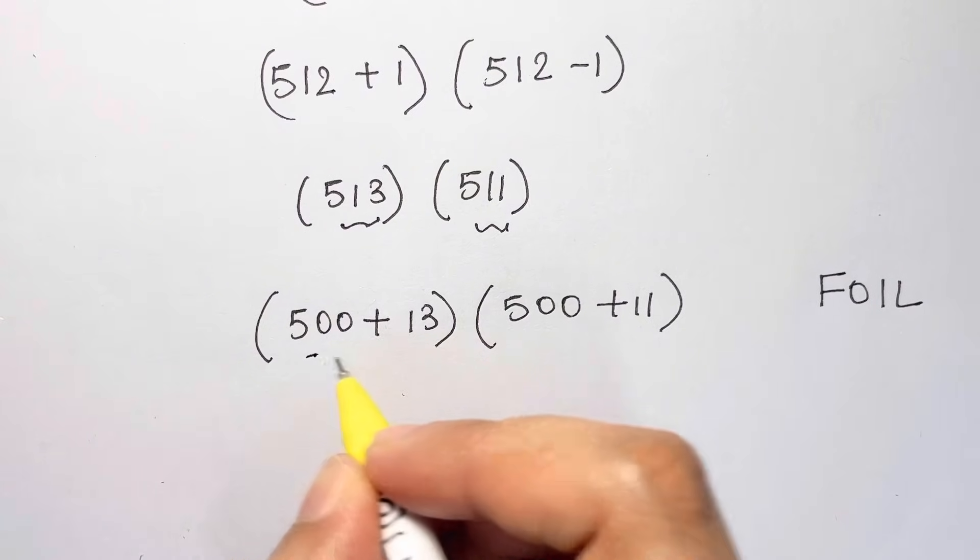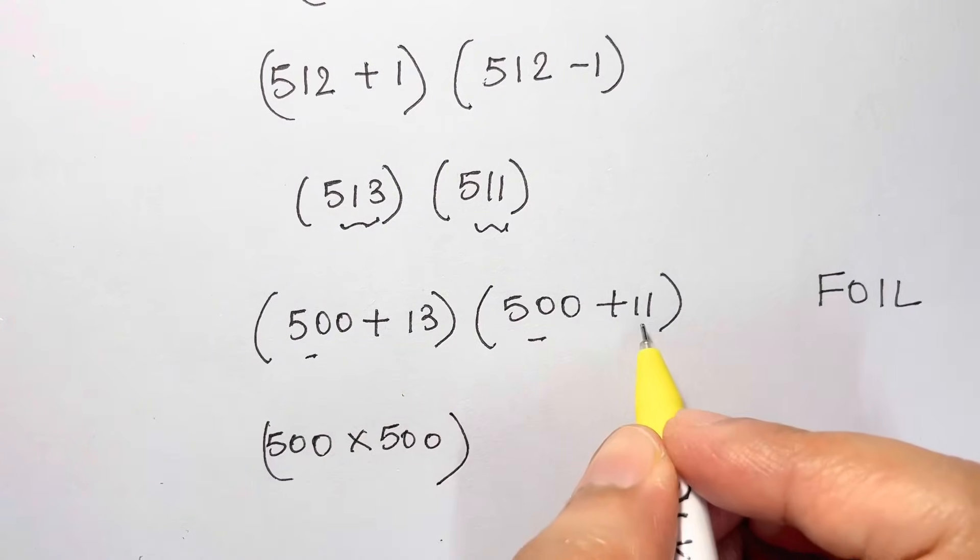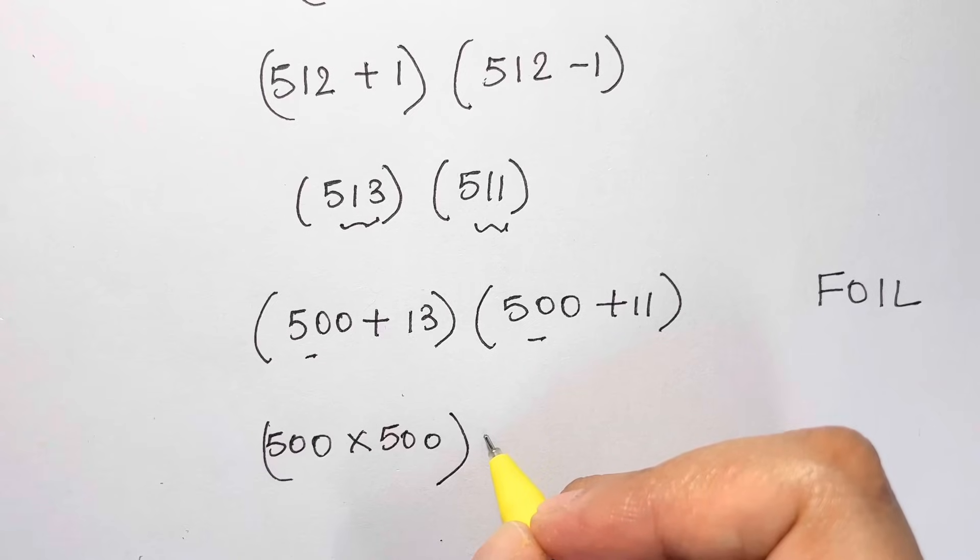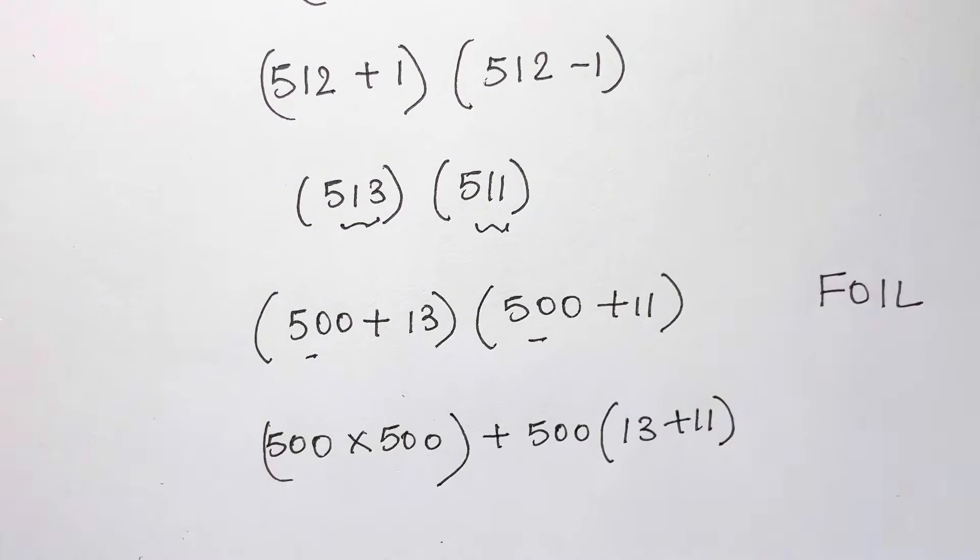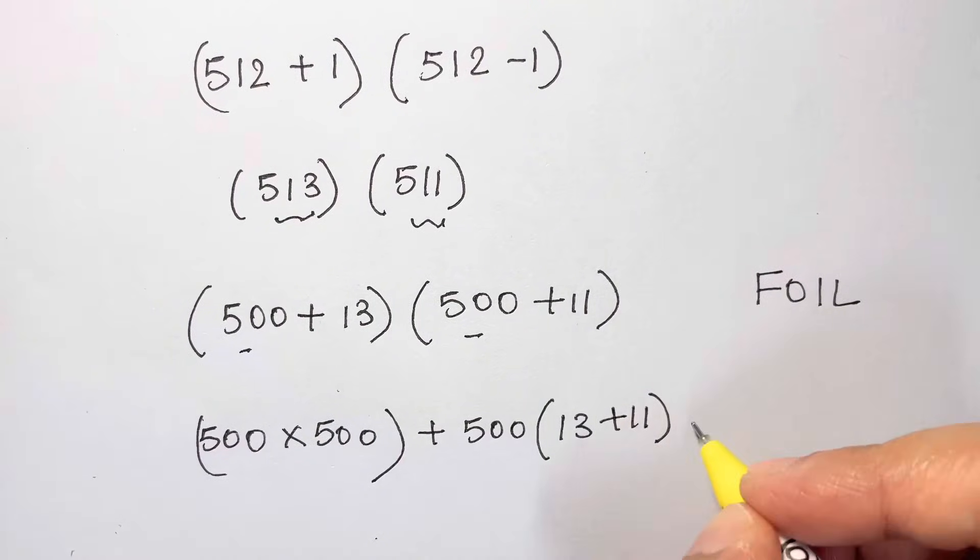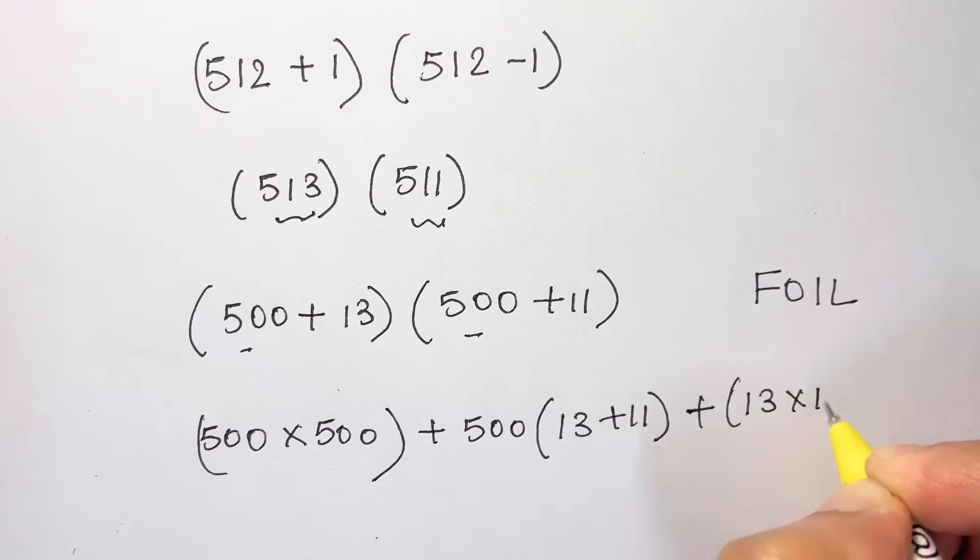So we have 500 times 500, then we have 500 times 11, 500 times 13. So we are going to write it like this: plus 500 multiplied by 13 plus 11, and then the last term plus 13 times 11.